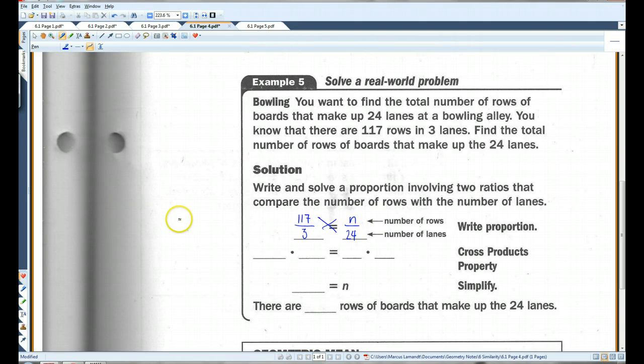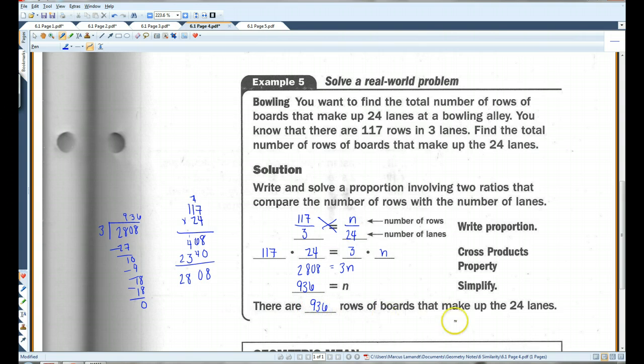Let's cross multiply. 117 times 24 equals 3 times n. So let's multiply this out. So I've got 2,808 equals 3n. Let's divide by 3. n equals 936. So there are 936 rows of boards that make up 24 lanes.